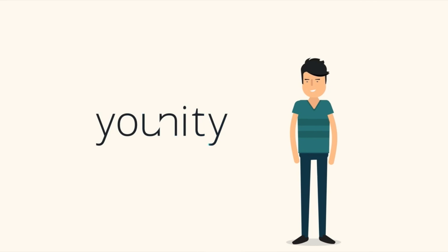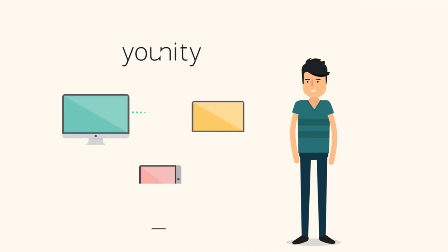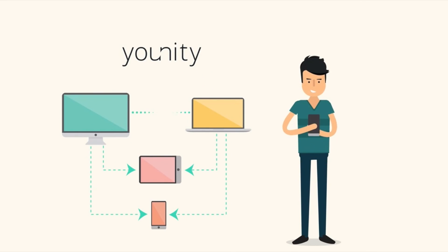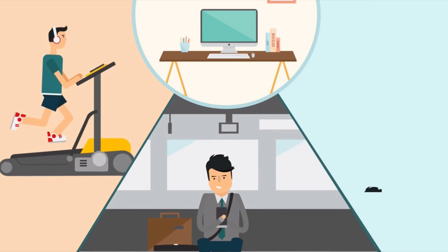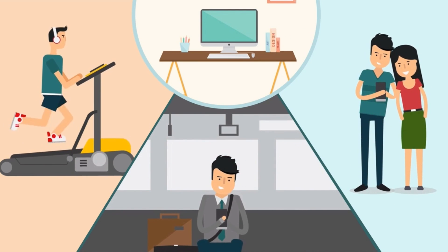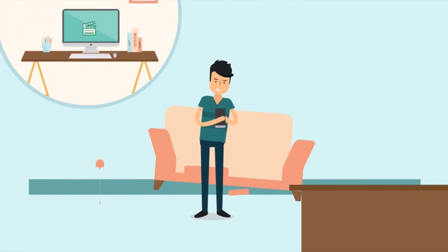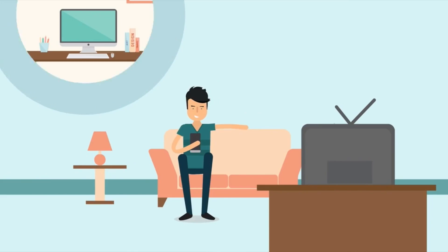Unity is an application that uses the hard drive on your computer and your internet connection to make your own cloud storage. With Unity, you're able to access pictures, movies, music, and documents from your computer from anywhere in the world on any Android or iOS device. Unity is super easy to set up — I'm going to show you how and what it's capable of. Let's get started.